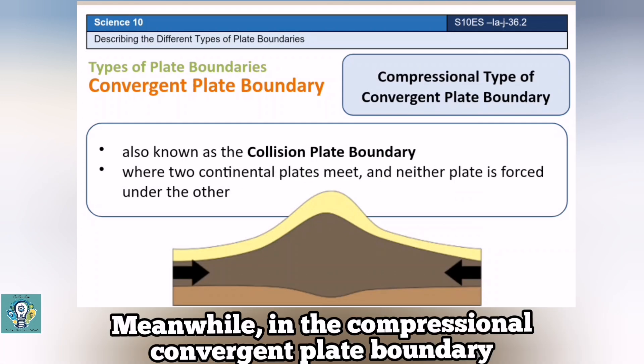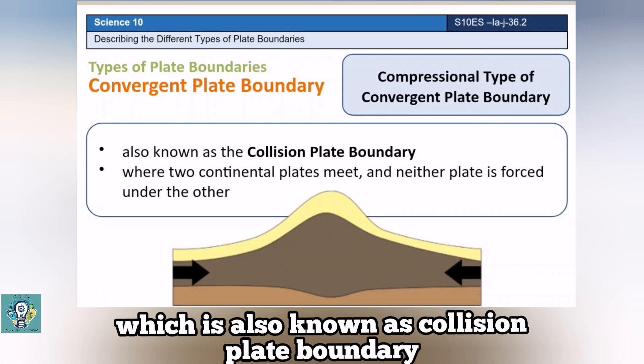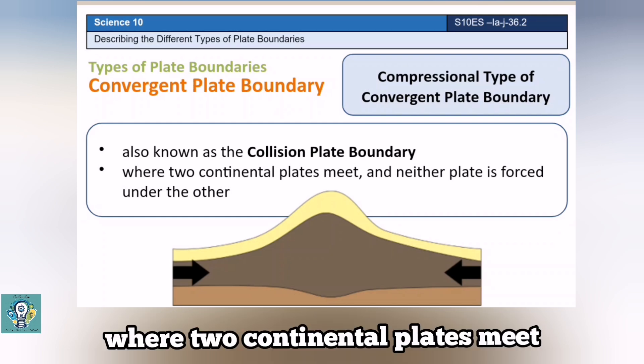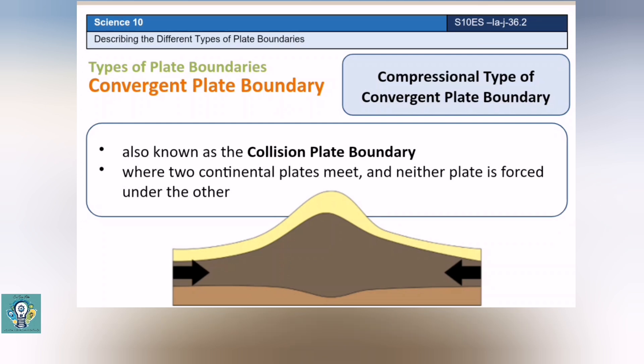Meanwhile, in the compressional convergent plate boundary, which is also known as collision plate boundary, two continental plates meet, and neither plate is forced under the other.